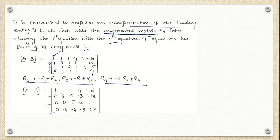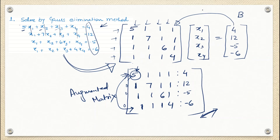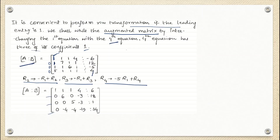This is my resultant augmented matrix. The way we write augmented matrix is A colon B, where B is the column matrix present on the right hand side. After doing these transformations, we have got this equivalent matrix.